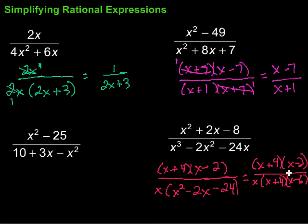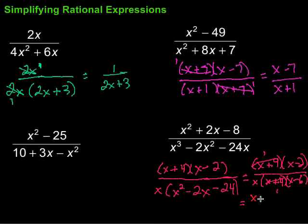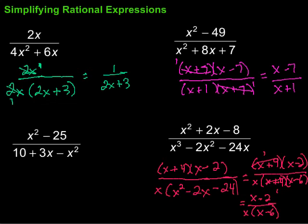Remember, you can double-check that by foiling it out. Then we look at top and bottom for anything in common. We've got an (x + 4) on top and an (x + 4) on the bottom — those will cancel out. That becomes 1 and 1. We're left with x − 2 on top, and on the bottom we have x times (x − 6). So that's simplified — got rid of quite a bit of stuff there in our process of simplification.